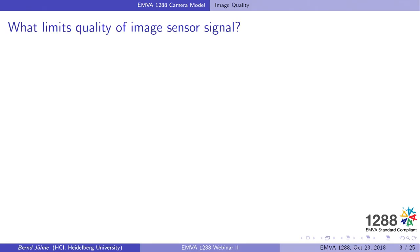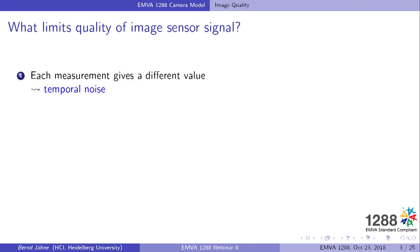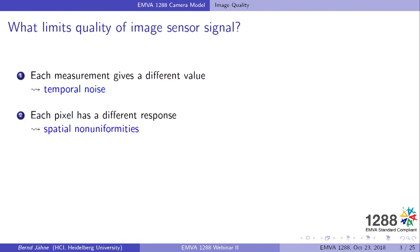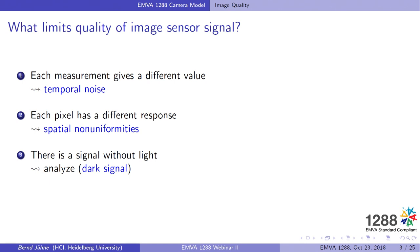Let's get started with the question we addressed in the first webinar, where we asked what limits actually the quality of the image sensor signal. We learned basically that there are three effects. One is that each measurement you do gives a slightly different value, and this effect is called temporal noise. Then we have many pixels, each with a little bit different response, which means we have spatial non-uniformities. And finally, there is also a signal without light which is called a dark signal.